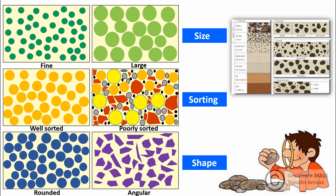In addition to that, texture can be described in terms of rounded and angular grains. Rounded grain texture reflects the smoothness of the grains and absence of sharp edges, whereas angular grains are characterized by sharp edges and curvature.